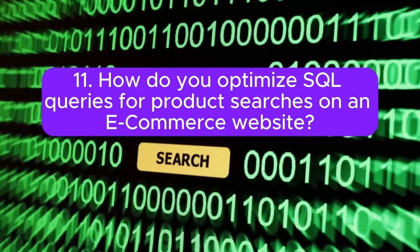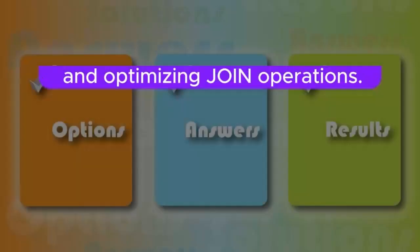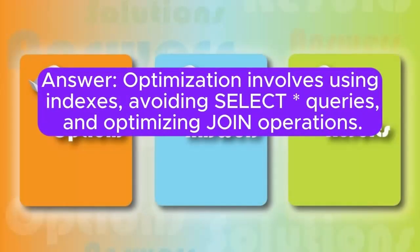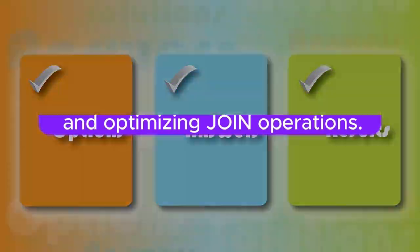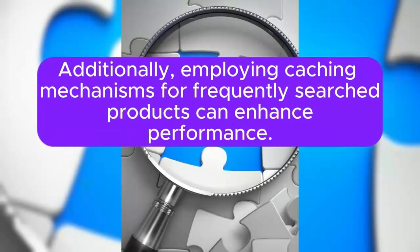Question 11: How do you optimize SQL queries for product searches on an e-commerce website? Optimization involves using indexes, avoiding SELECT * queries, and optimizing join operations. Additionally, employing caching mechanisms for frequently searched products can enhance performance.